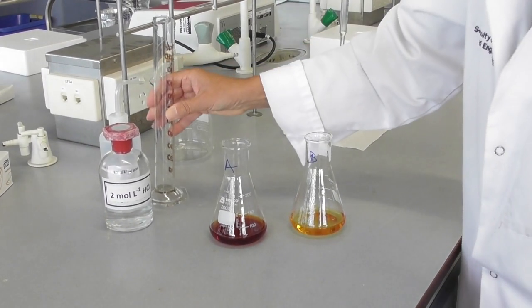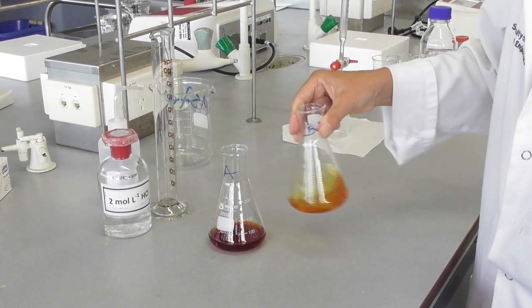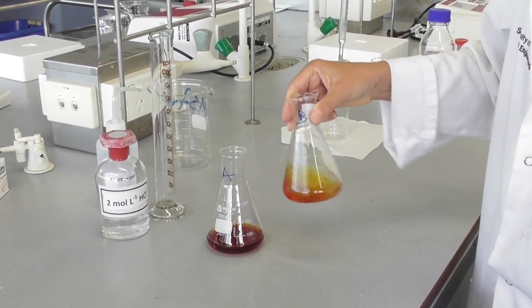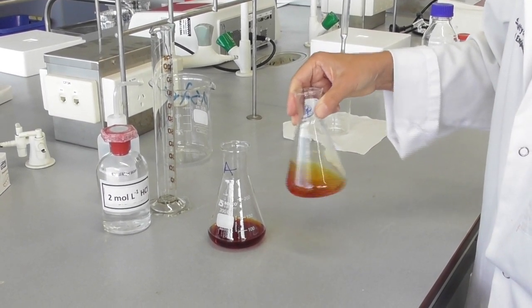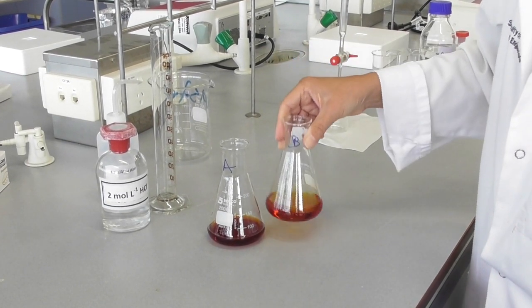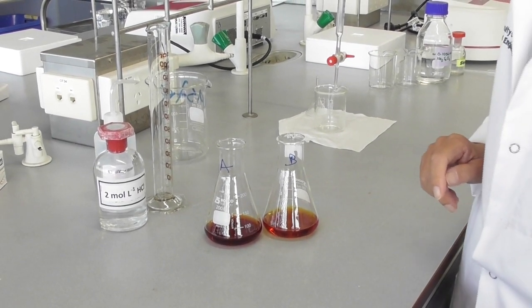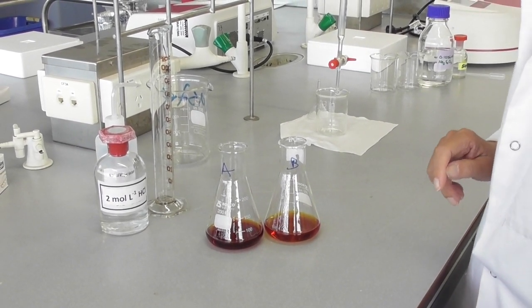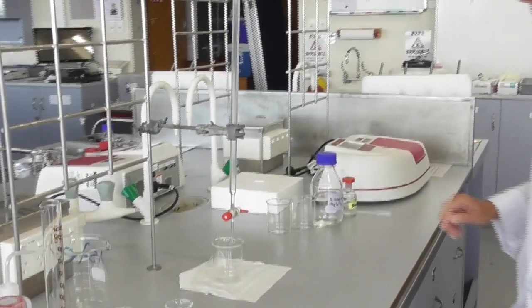Initially the solution turns yellow but then darkens to orange or brown. If it doesn't go dark I've made a mistake adding my reagents and have to start over. To make sure all the potassium iodide reacts with the peroxyborate, I need to let this sit for about two minutes before starting my titration.